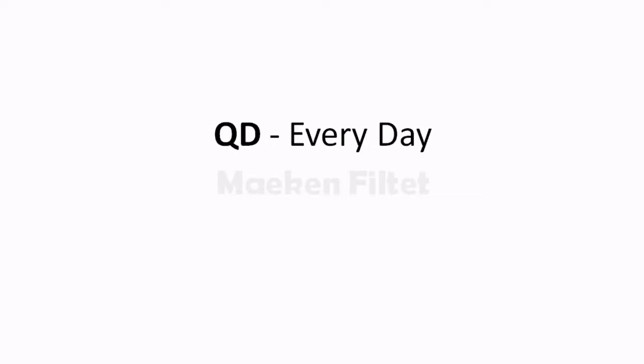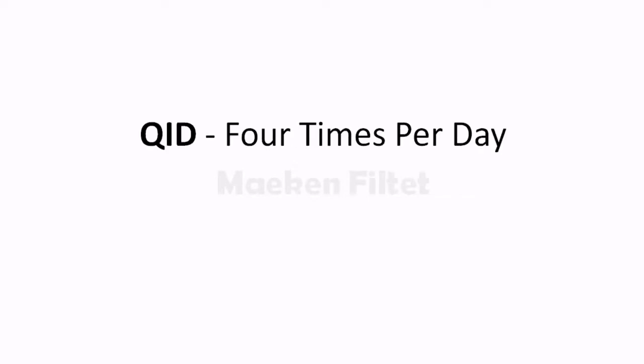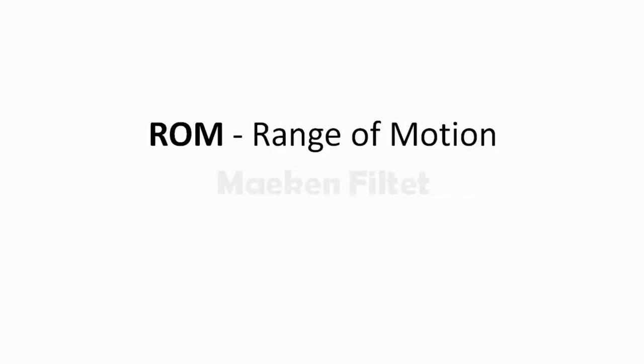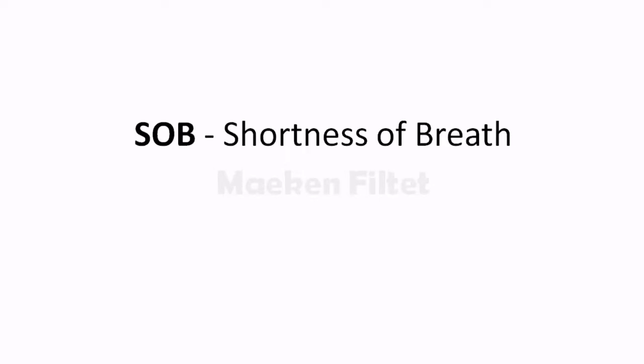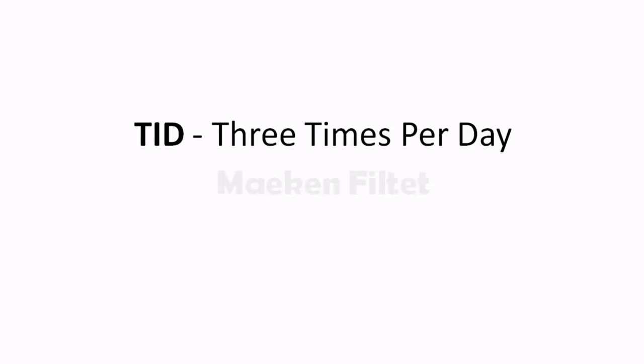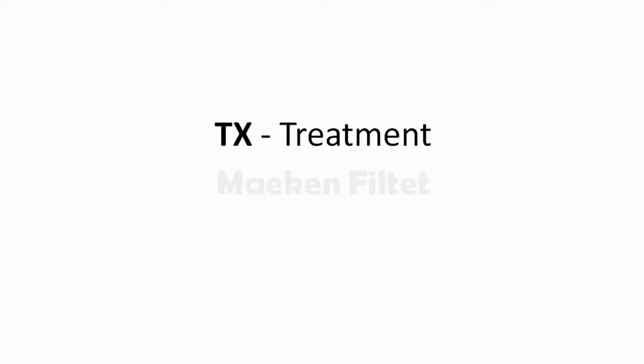N&V — nausea and vomiting; oob — out of bed; pc — after meals; po — by mouth; prn — as necessary; qd — every day; qh — every hour; qid — four times per day; rom — range of motion; sob — shortness of breath; tid — three times per day; tx — treatment; vs — vital signs; wc — wheelchair.